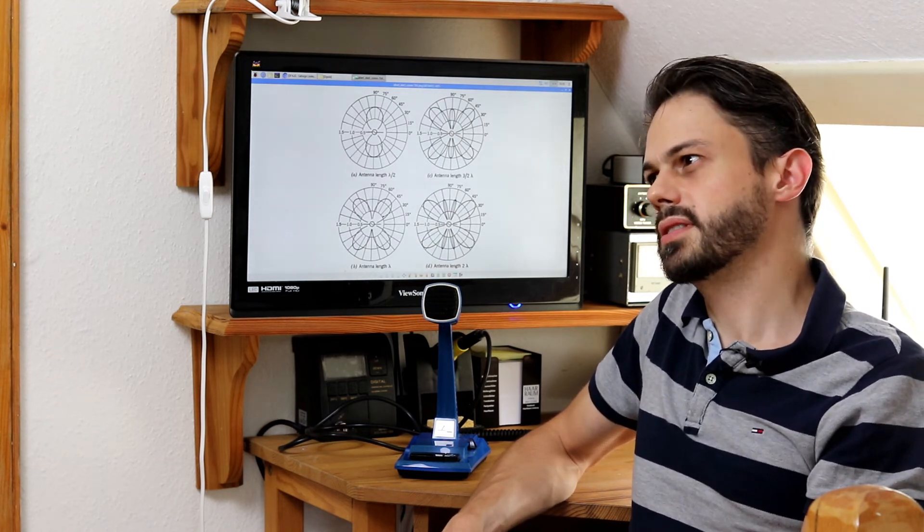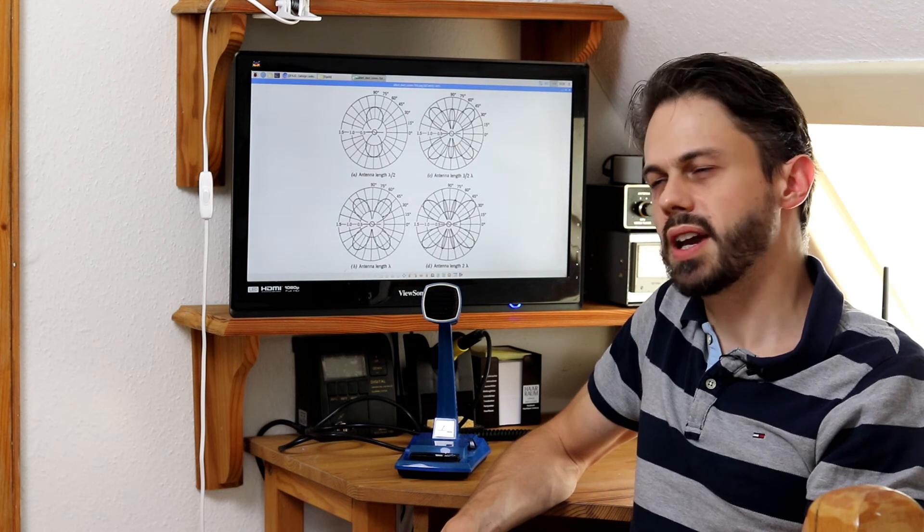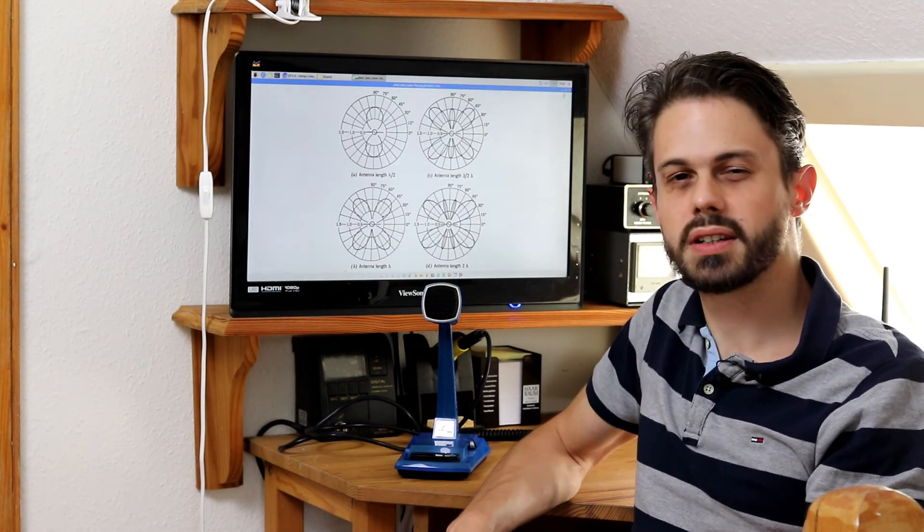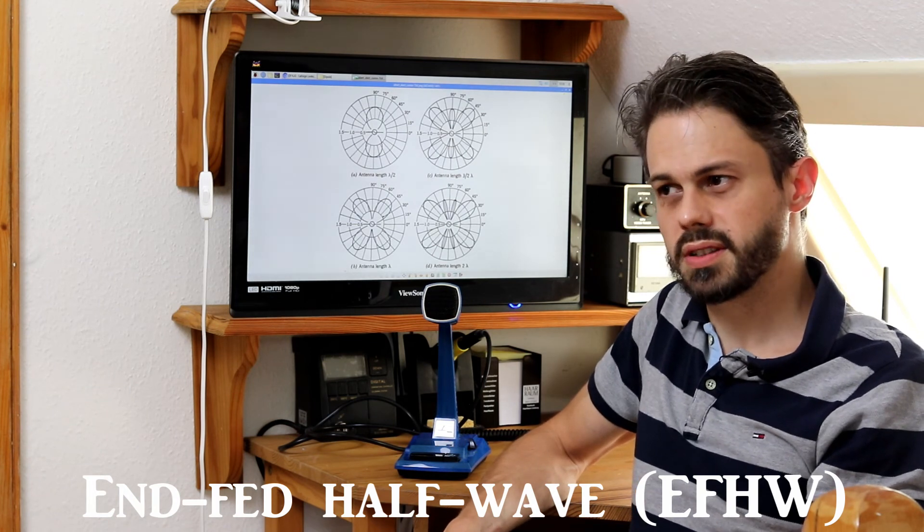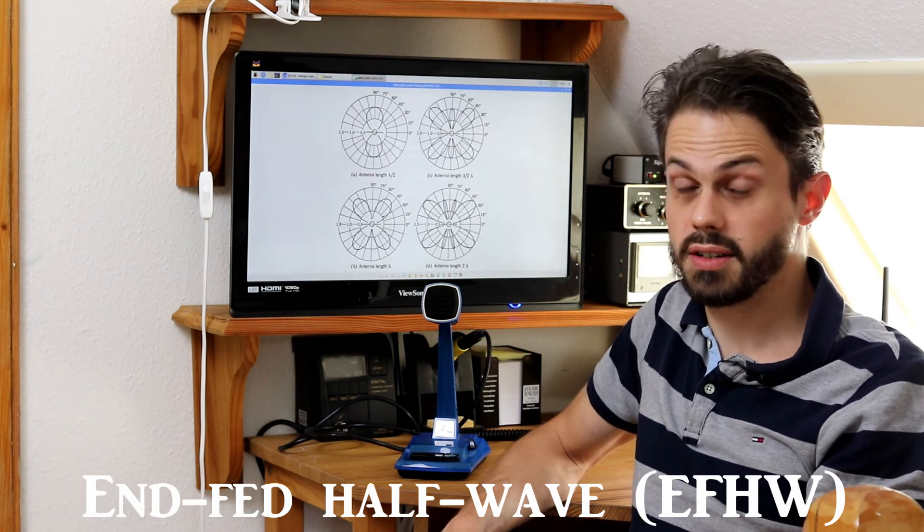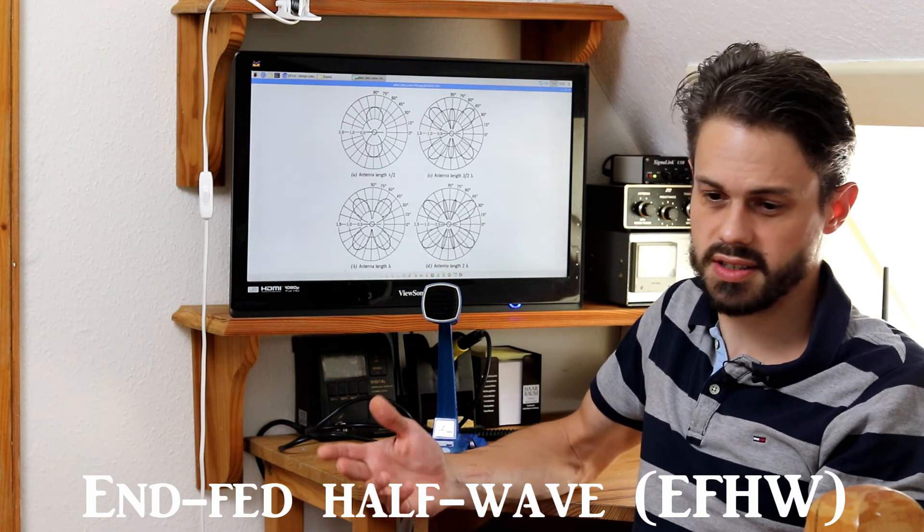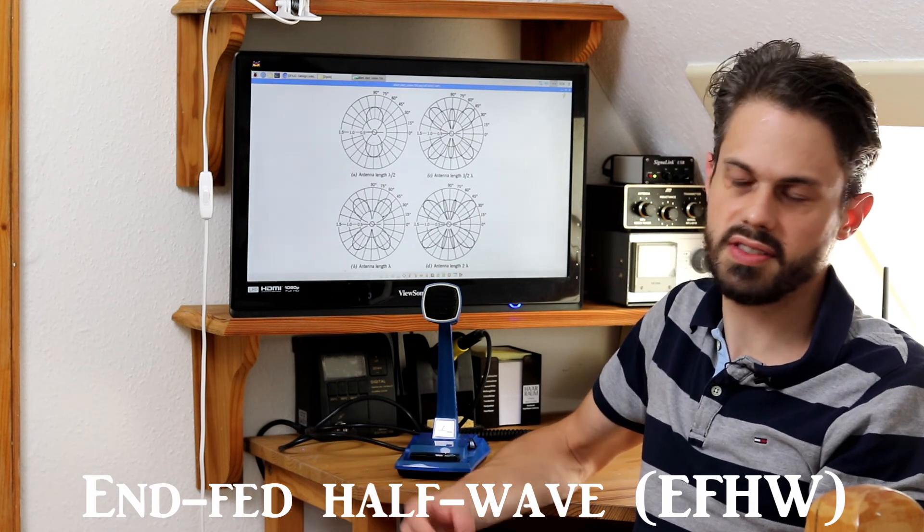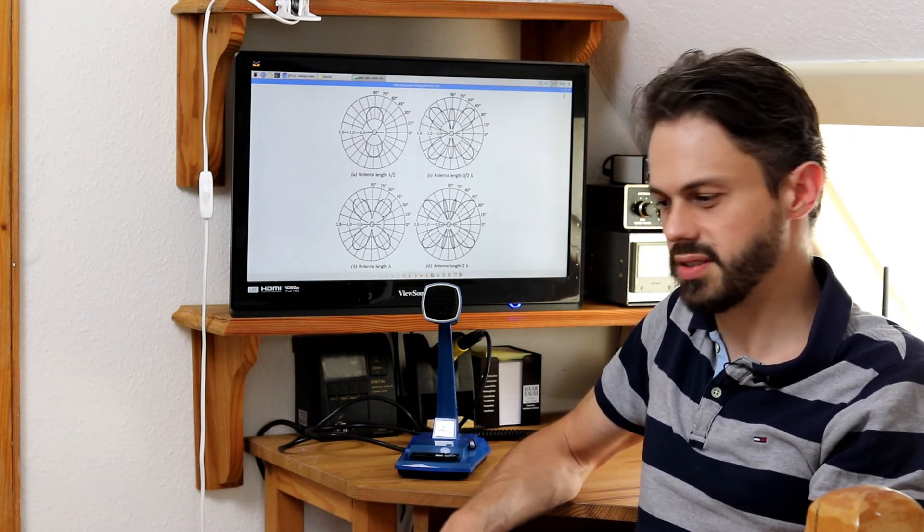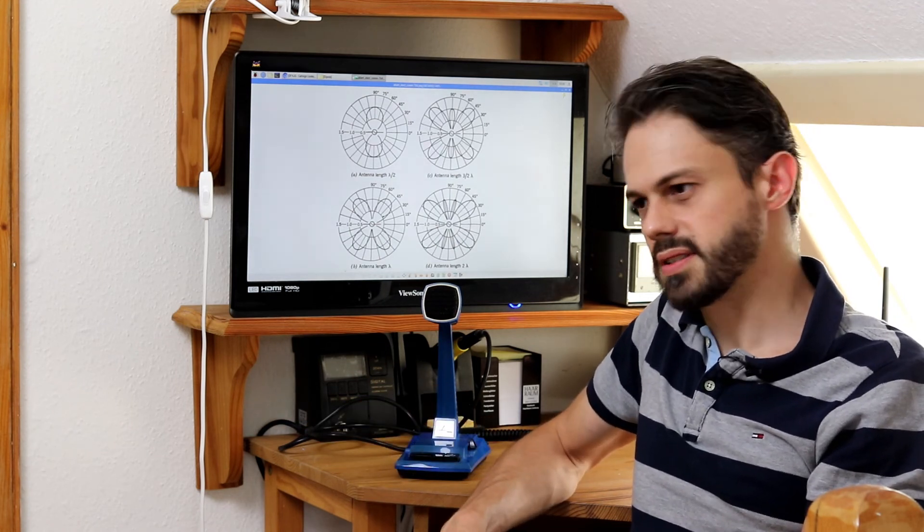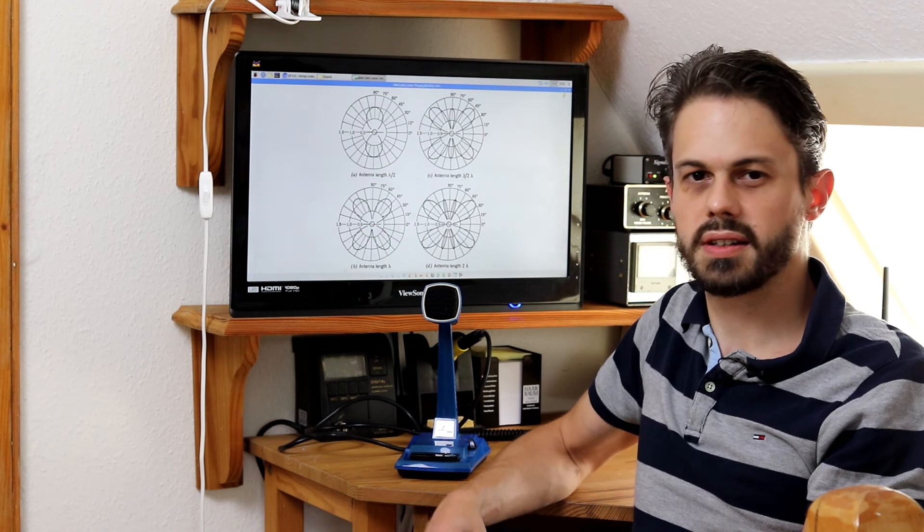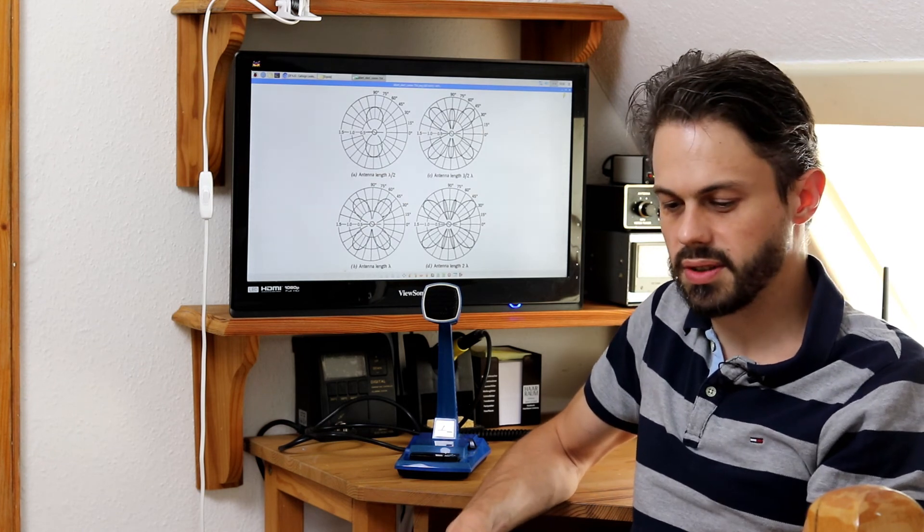And if you can't put up one of these maybe you can look into EFHW half wave antennas. I have one installed now at my QTH here and it works fantastic. It's basically just an end-fed dipole. It's the same thing as a dipole only that you feed it from the end and you need a little transformer. But it's the same radiation pattern I think and it's the same general idea.